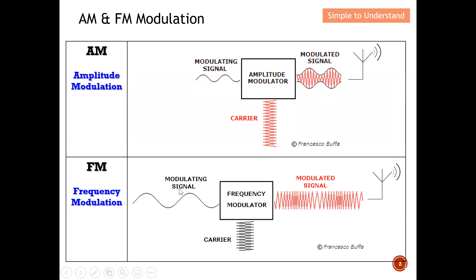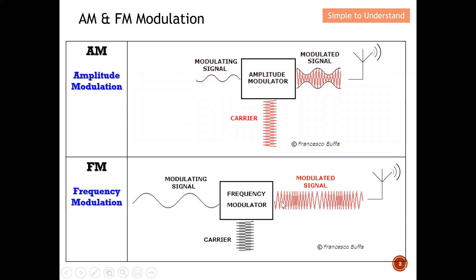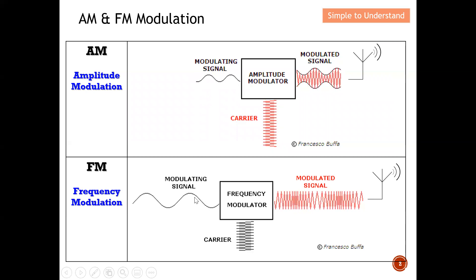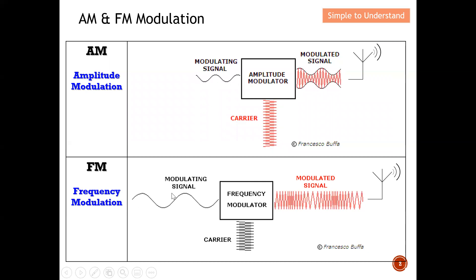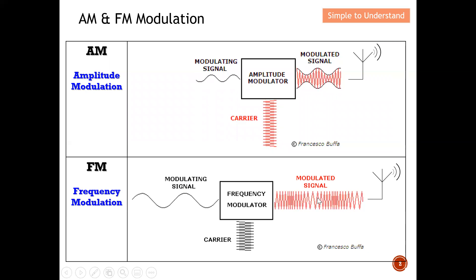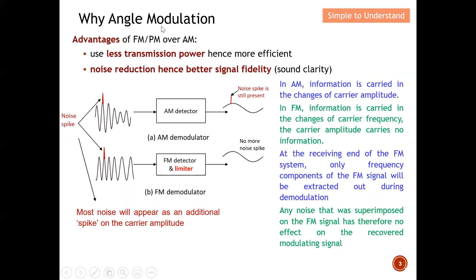As for frequency modulation, it is slightly different. Again, this is the modulating signal — the signal we want to send to the recipient. This is the carrier. For frequency modulation, the modulated signal has a constant amplitude. The modulating signal is represented by frequency: when the modulating signal is at its highest amplitude, it is represented by higher frequency; when it is at the lowest amplitude, it is represented by the lowest frequency.